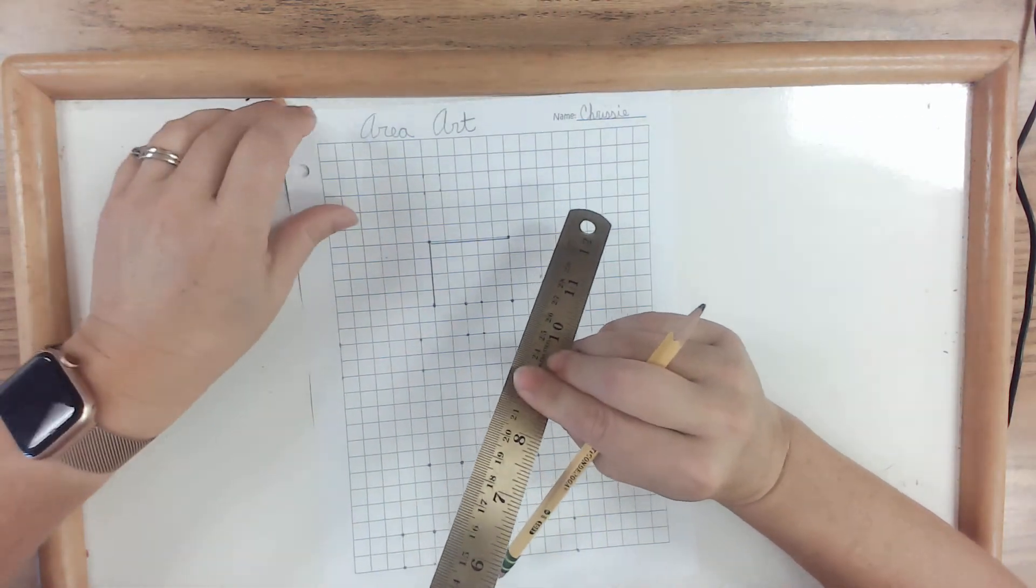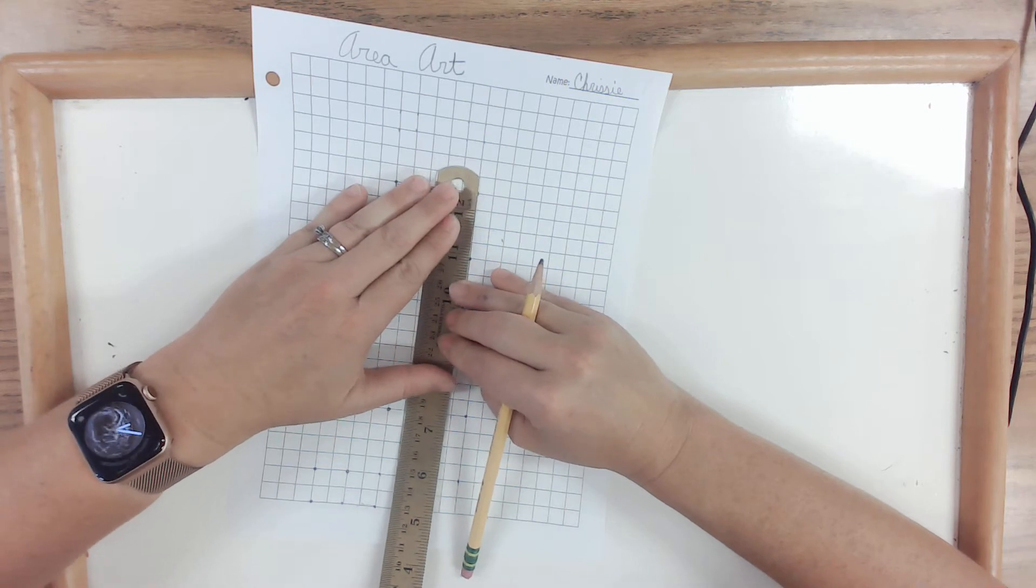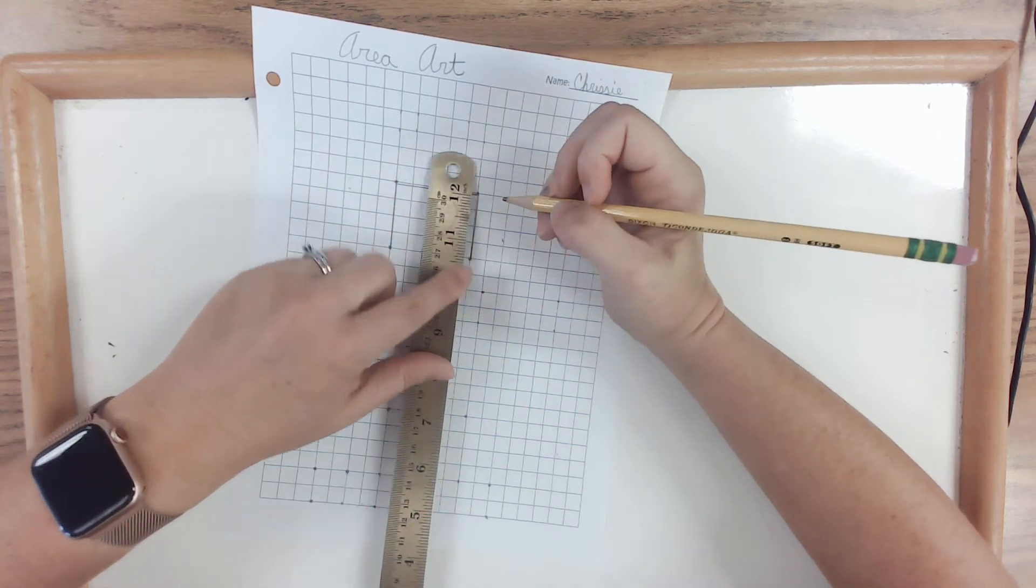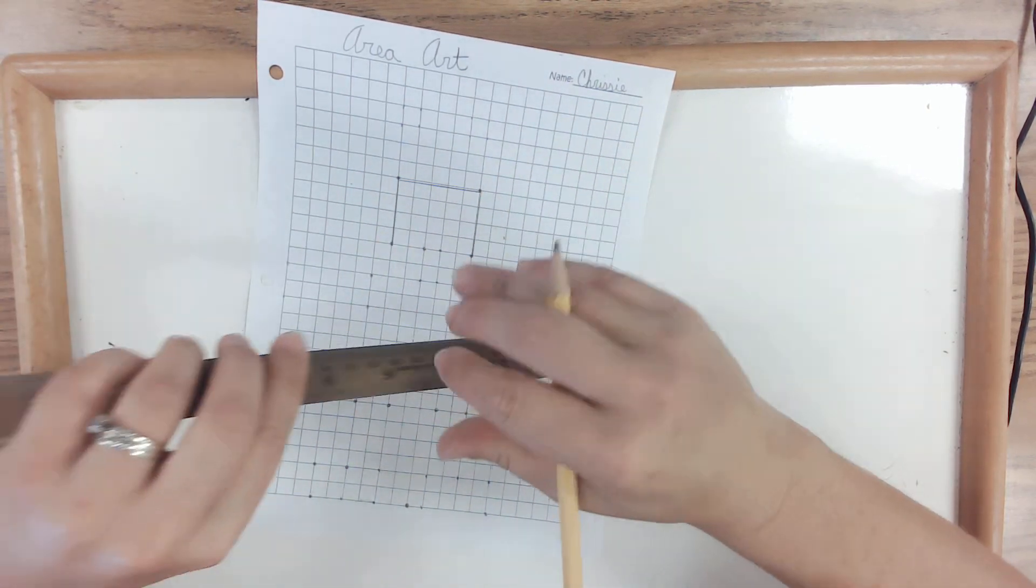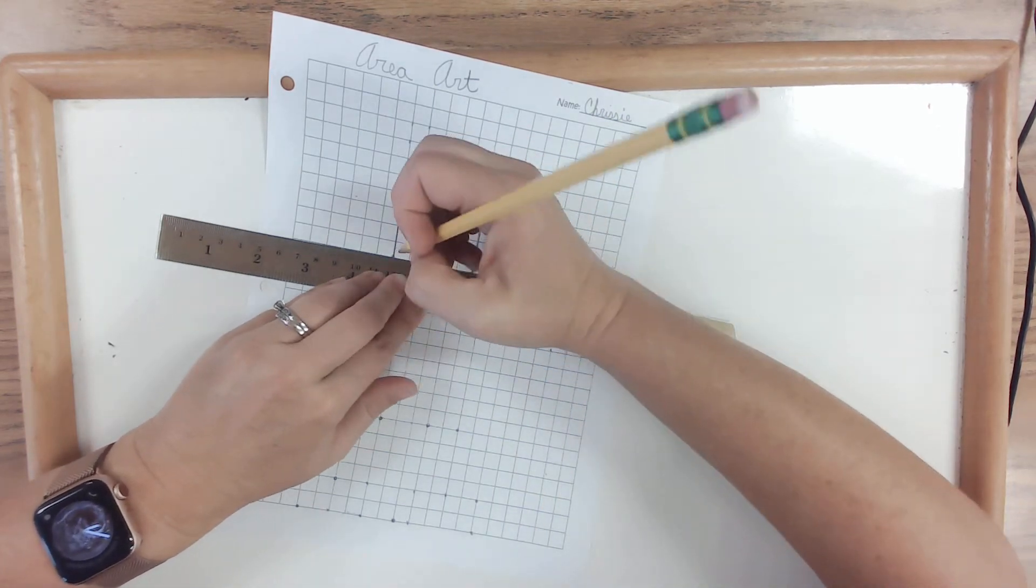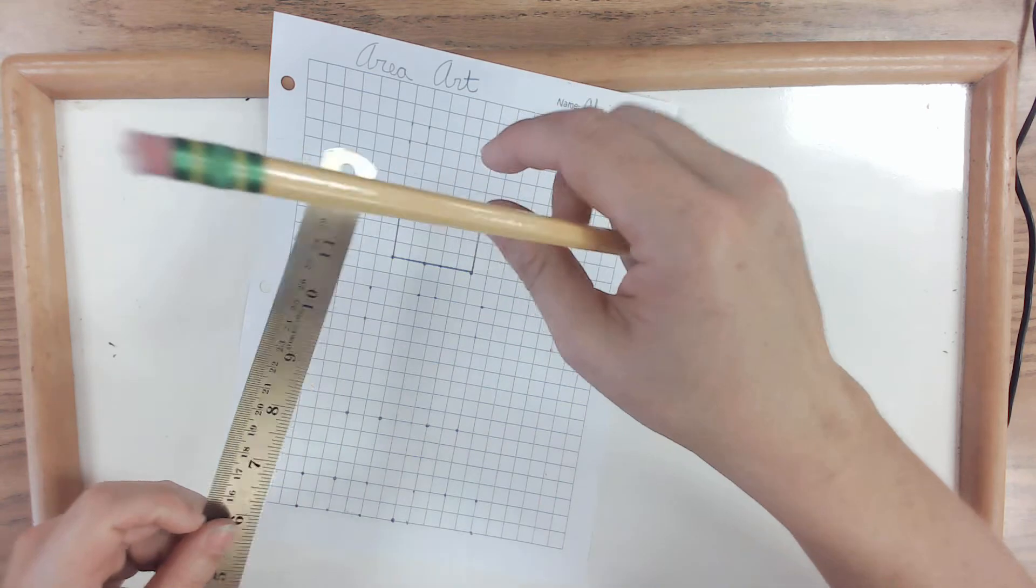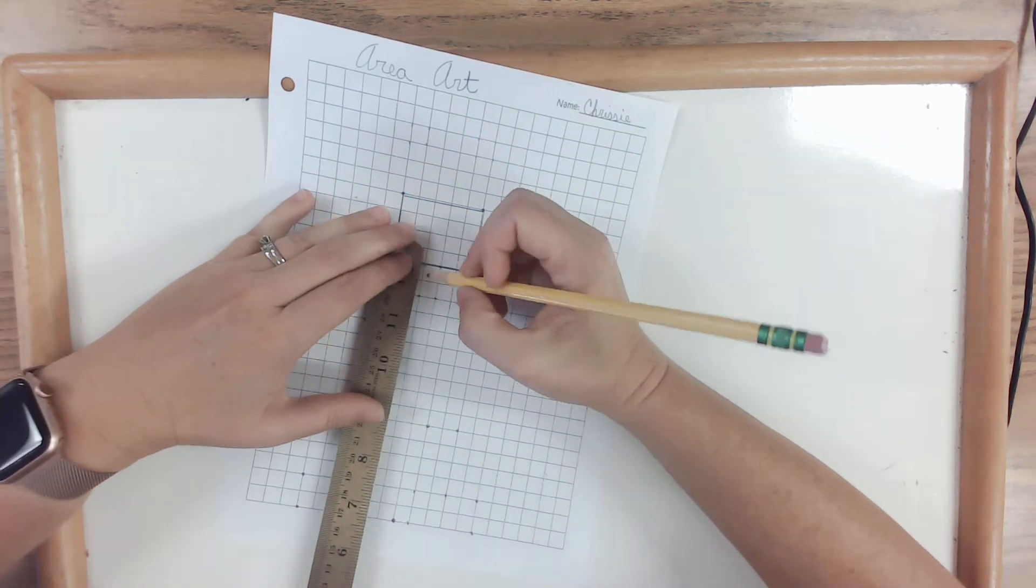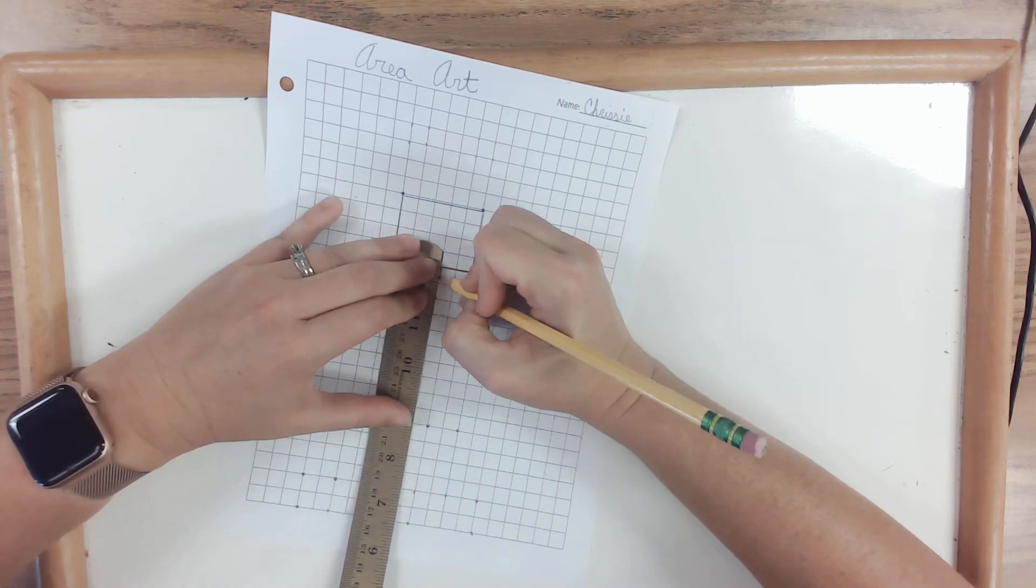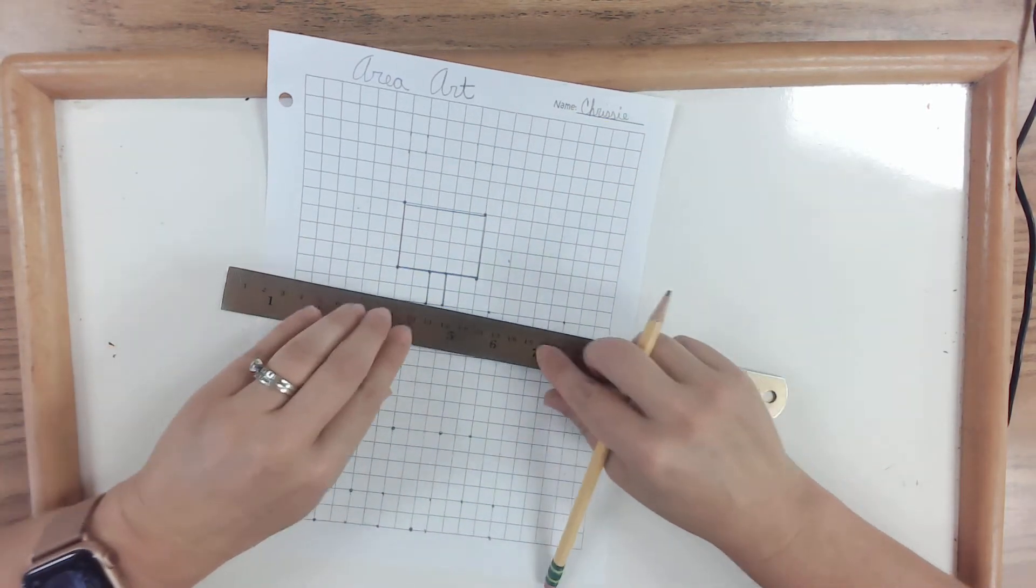Some people did really pretty pictures of a panda bear standing in a bamboo forest. Someone else drew a picture of a boy walking a dog on a leash. You have lots of different options that you can use. You're only limited by your imagination. And you want to use a straight edge. It gives you a nice crisp line. It also lets you really count your squares accurately. You're going to draw anything you like.